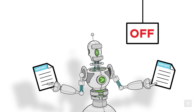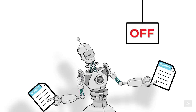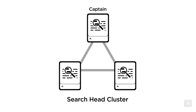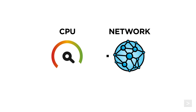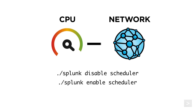You do have the ability to disable the search scheduler altogether. However, it's not recommended. When the report scheduler is disabled, scheduled reports, alerts, and summary indexing populating searches will not run. In addition, any actions related to triggered alerts and scheduled reports will not be performed. If you disable the search scheduler in a search head cluster, all members will be affected. If you are looking to resolve a heavy processing load or problems related to the network or hardware, you can try disabling the search scheduler by running splunk disable scheduler. Use enable to enable the scheduler, and show to check the status.